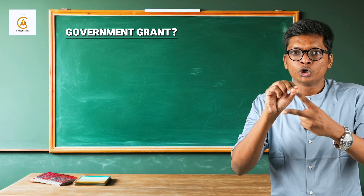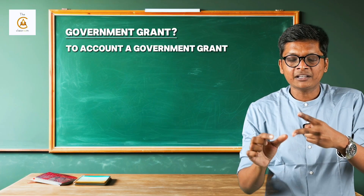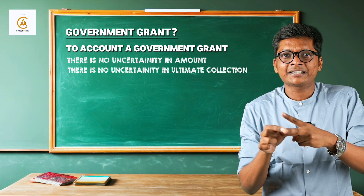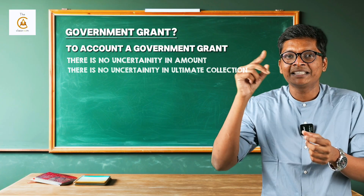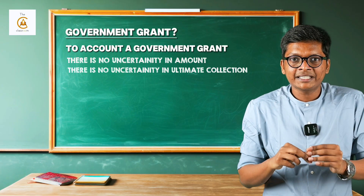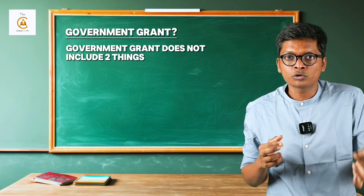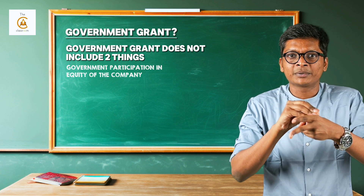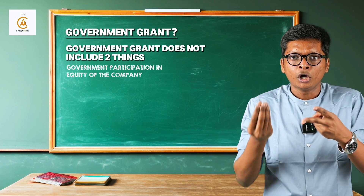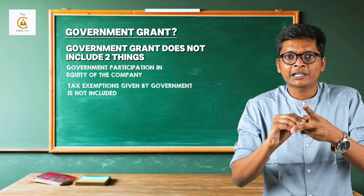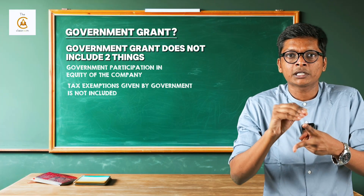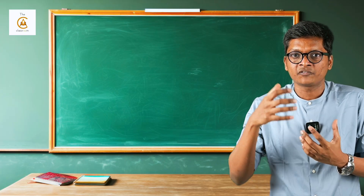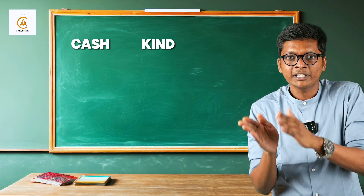To account for a government grant, you have to check two important things: there is no uncertainty in the amount, and there is no uncertainty in ultimate collection - the same condition that comes in AS 9. Government grant does not include two things: government participation in equity of the company, and any tax exemptions given by the government. These are not included in AS 12 government grants.